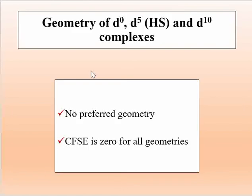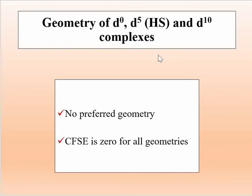We can also predict the geometry of different complexes on the basis of CFSE. For configurations D0, D5 high spin, and D10, the CFSE is zero in all geometries — octahedral, tetrahedral, and square planar. So when CFSE is zero, we cannot distinguish preferred geometry from CFSE alone, but for other configurations we can predict whether the complex will be octahedral, tetrahedral, or square planar.